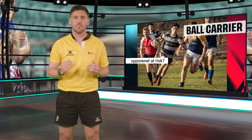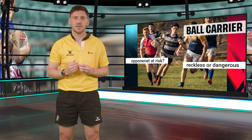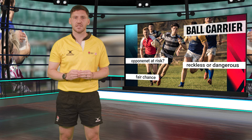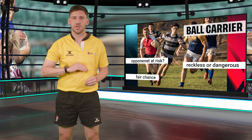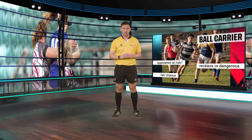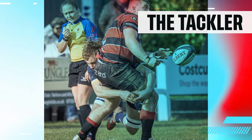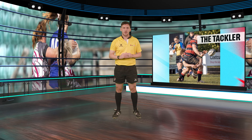A good way of thinking about this law is thinking about safety and equity. Did the ball carrier's actions put the opponent at risk? Was the ball carrier reckless or dangerous in their actions? And did the tackler have a fair chance of making a below the base of the sternum tackle? These can be difficult to see, but by thinking about it in terms of safety and equity, it can help you spot them more effectively.